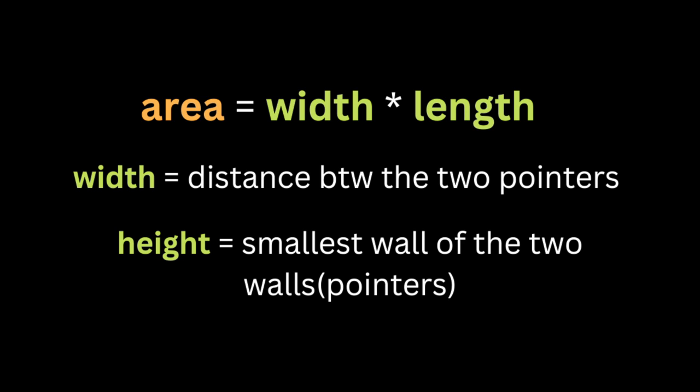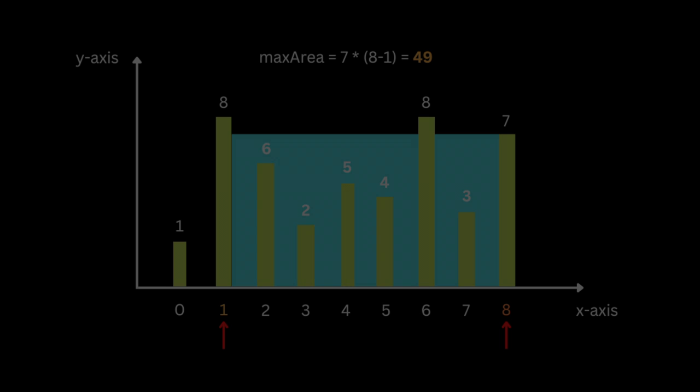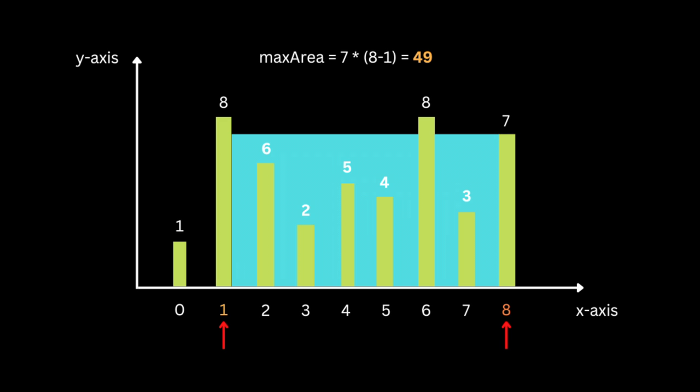You can think of it as a rectangle. To figure out the area of a rectangle, we use the shorter line as the length and the distance between the two bars as the width. So the current area is width times height. You're going to calculate the area of this container using the left and right pointers.